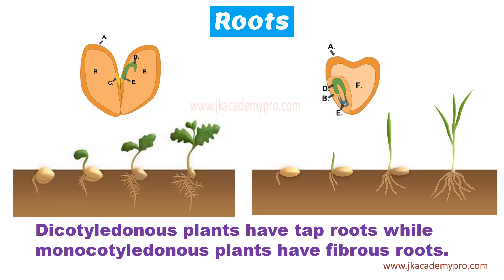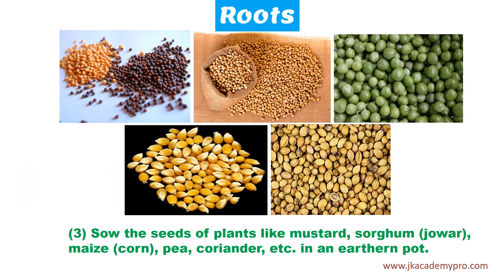Dicotyledonous plants have tap roots while monocotyledonous plants have fibrous roots. Dicotyledonous seeds have two parts — for example, grams, green peas, and groundnuts can be split into two. Monocotyledonous seeds, like rice and wheat, have one part, and these plants grow fibrous roots.